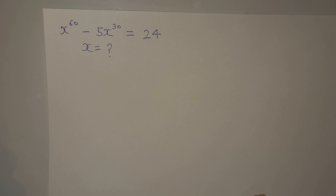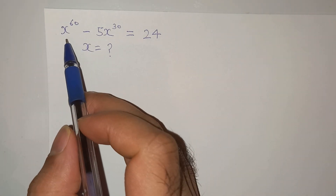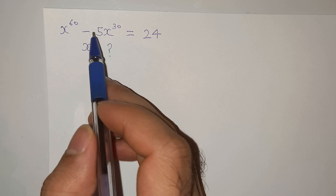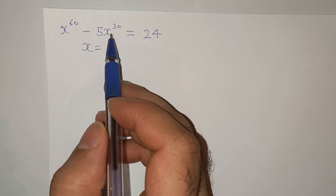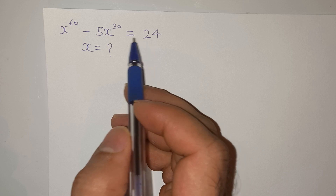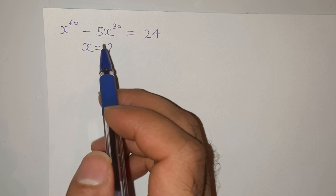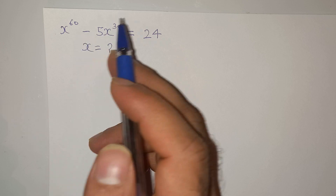Hi guys, welcome back to the channel. We have this question: x power 60 minus 5x power 30 equals to 24. We have to find the value of x. Let's try to solve this equation.